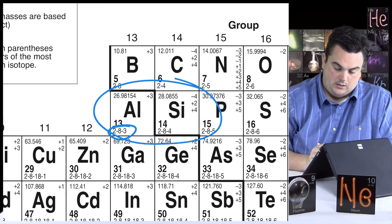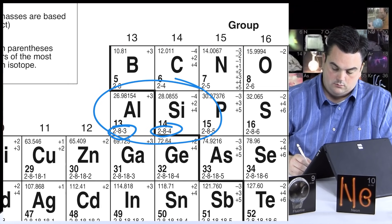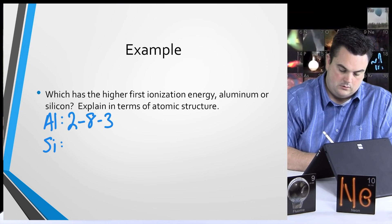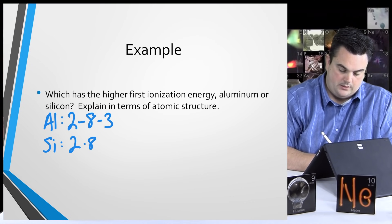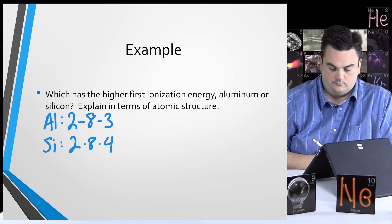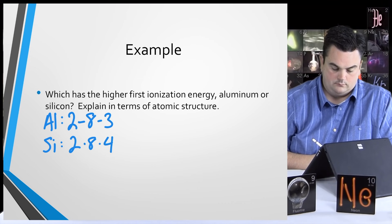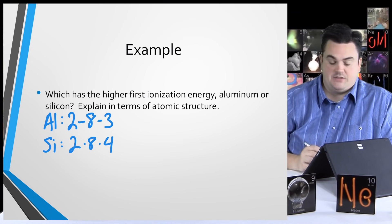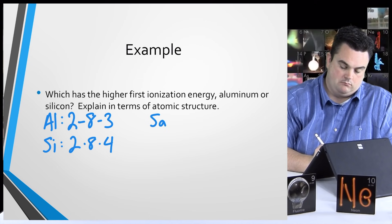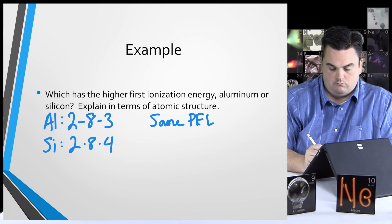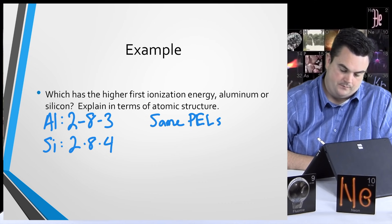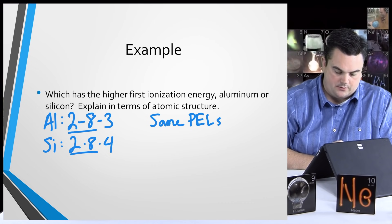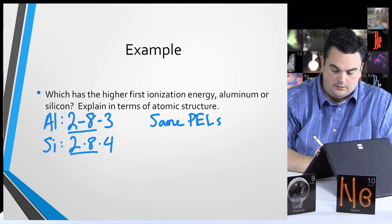Aluminum has the electron configuration 2-8-3 and silicon is 2-8-4. Looking at energy levels, they both have three PELs — that stays the same. Looking at core or shielding electrons, they both have the same: the 2-8 inner electrons. So the shielding is also the same.